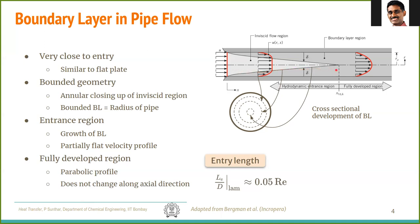The entry length is denoted usually by LE, or in this book by Incropera, it is denoted as XFD,H. H stands for hydrodynamic, FD stands for fully developed. So XFD is the length it takes from the entry to this point to reach the fully developed velocity profile. So this length LE or XFD,H scales with the Reynolds number. So this divided by the diameter of the pipe goes as 0.05 times Re.